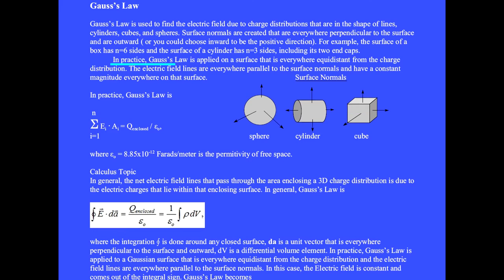In practice, Gauss's law is applied on a surface that is everywhere equidistant from the enclosed charge distribution. The surface of the sphere is everywhere equidistant from the point charge at the center. The curved surface of the cylinder is everywhere equidistant from the line of charge at its center. The top and bottom faces of the cube are everywhere equidistant from the sheet of charge at the center. The electric field lines are everywhere parallel to the surface normals and have constant magnitude on that surface.